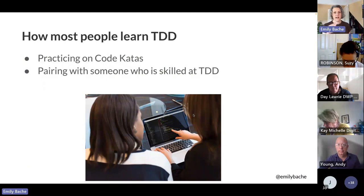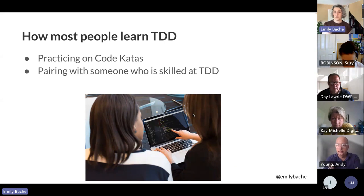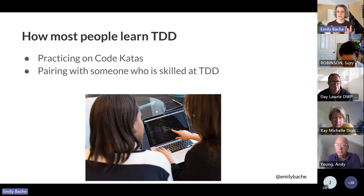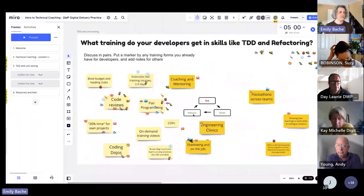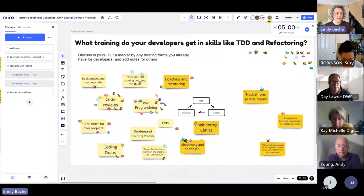I looked at how people actually successfully learn test-driven development, asked a lot of people I trust, and did some surveys. The top picks are normally practising on code katas and pairing — pair programming with somebody who knows it. Pair programming is one of the most effective ways to transfer skills in the code: manipulating it, refactoring it, writing tests. I didn't find anyone who learned TDD from things like code reviews or hackathons or training courses. Training courses are great for learning some things, but TDD is not one of those things.